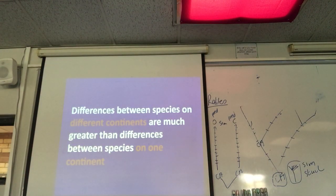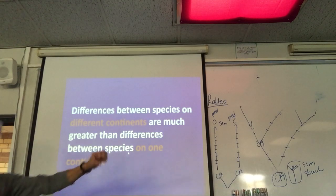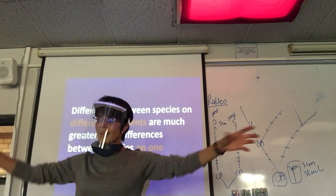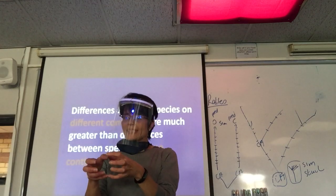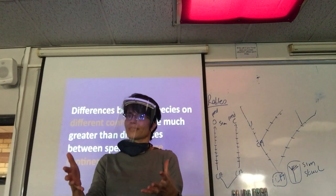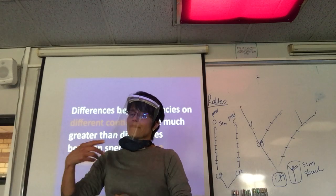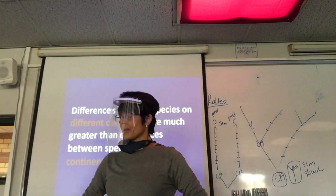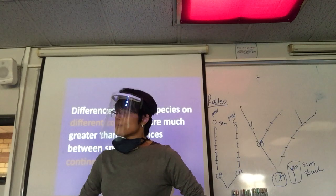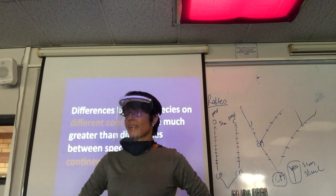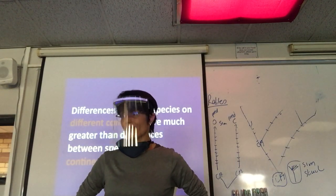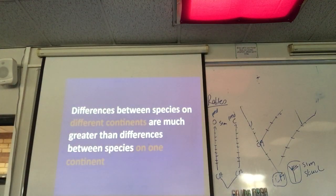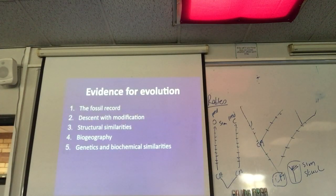So different species on different continents are much greater than the differences of species on one continent. That makes sense. Because continents are split, so there's more differences in those species that are evolving there, but less differences in the species on, say, in Africa because that's the environment. So they may have evolved, they may have mutations that allow them to be adapted to that environment, that changing environment. So that's biogeography.